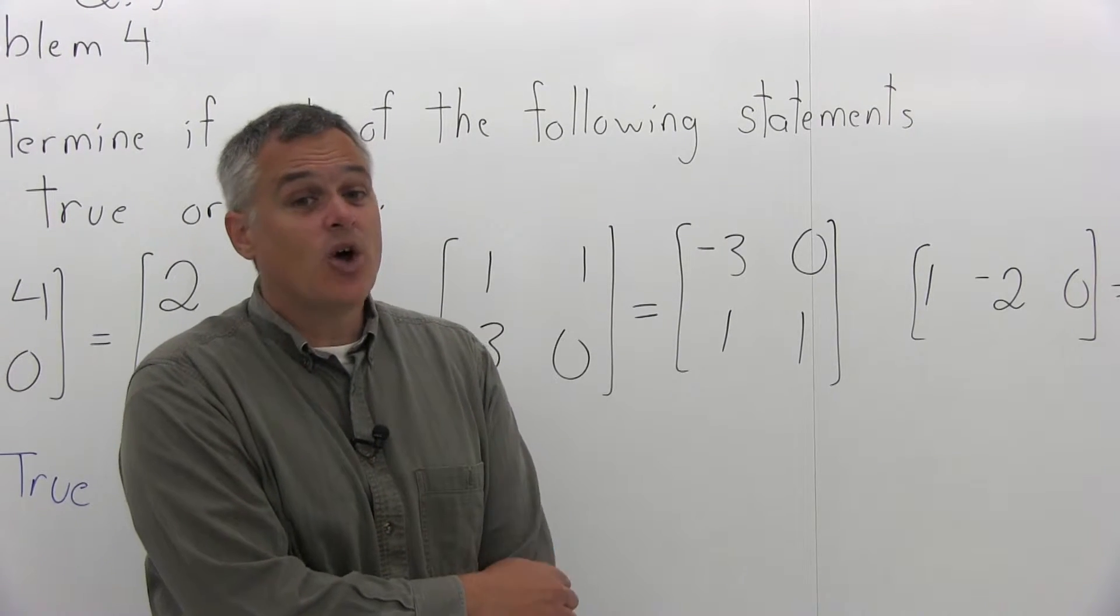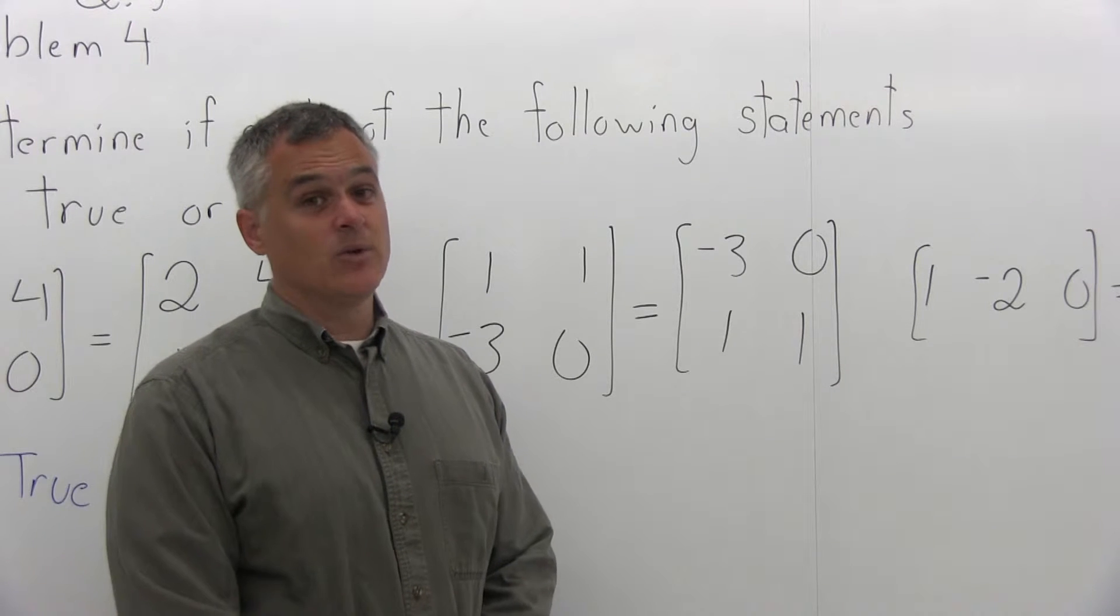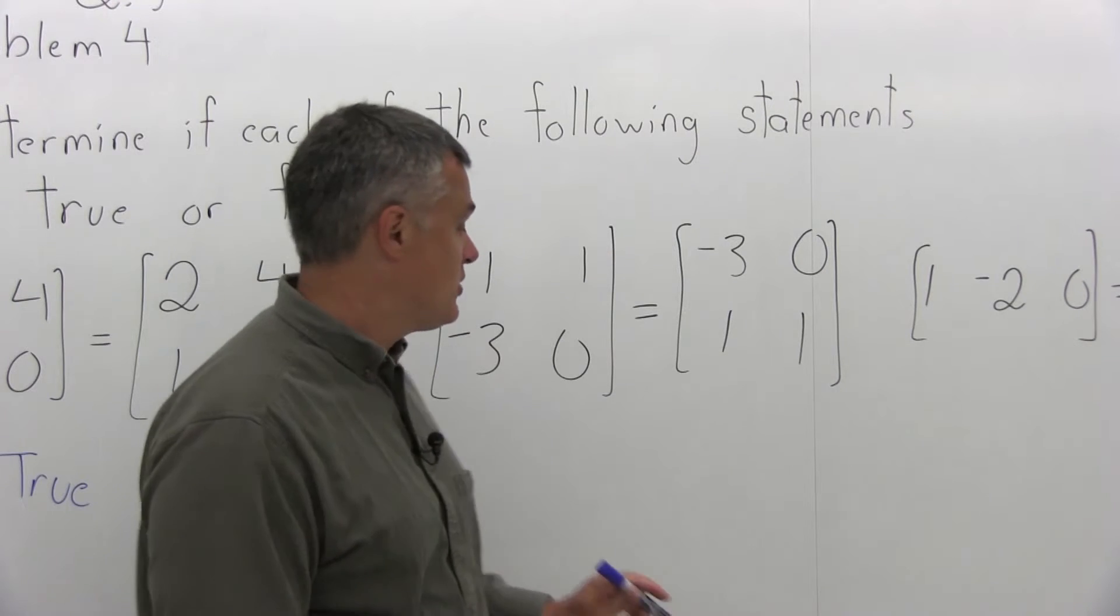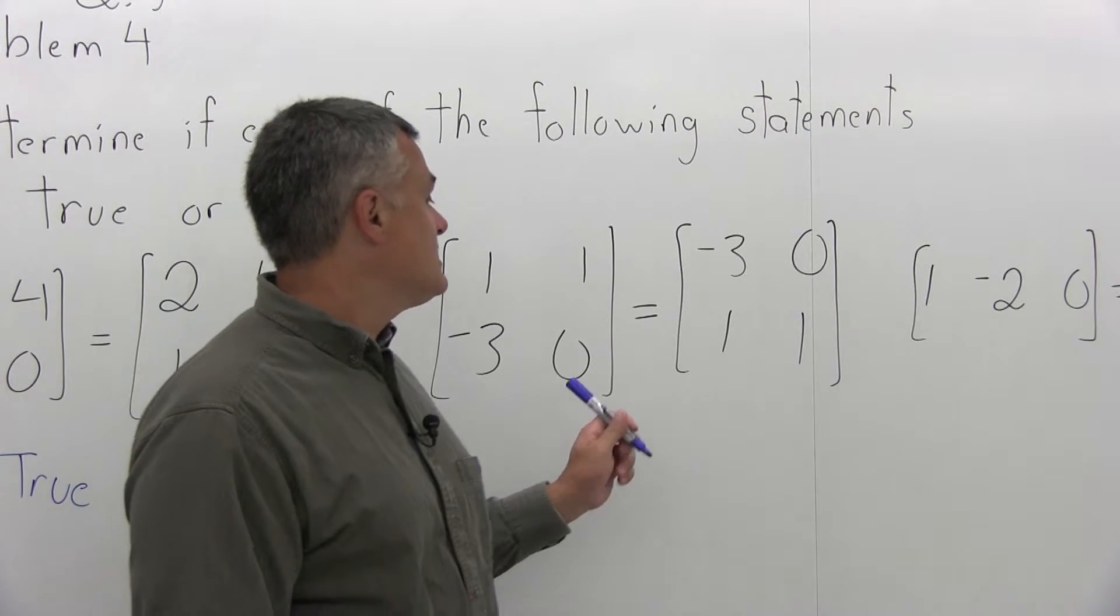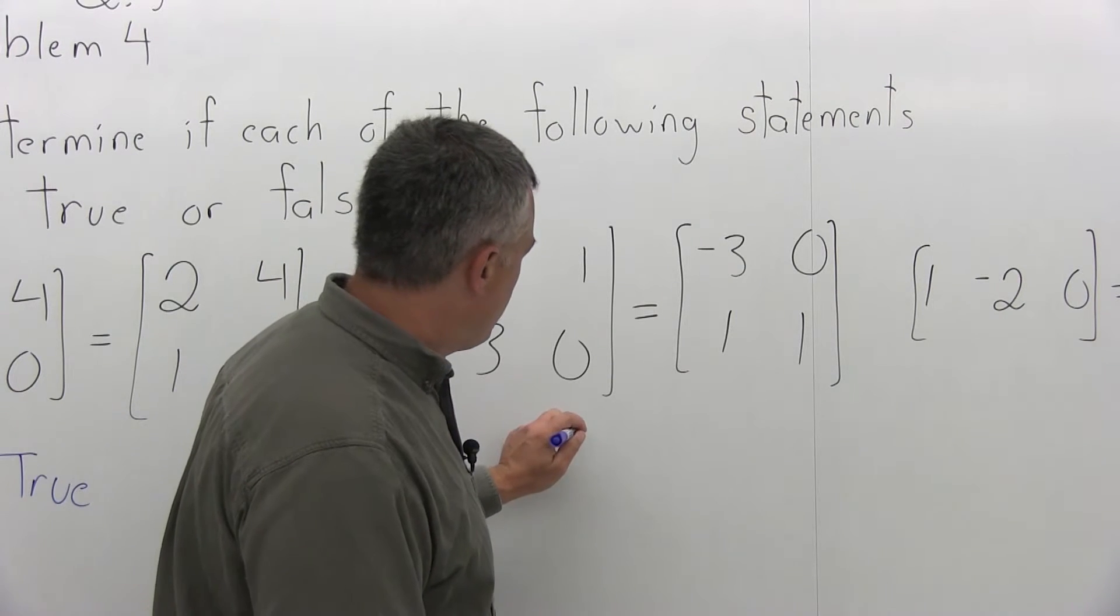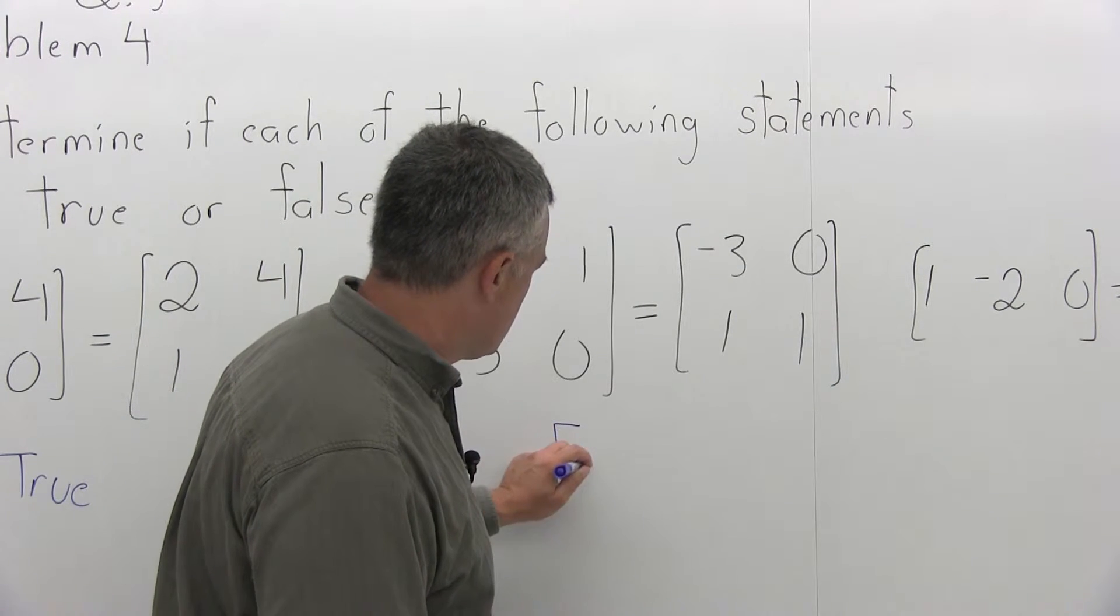The answer is they are not equal. You can make them equal—the word for that would be equivalent. These are equivalent matrices, but they are not equal because they're not exactly the same. So the statement that the matrix on the left is equal to the matrix on the right is false.